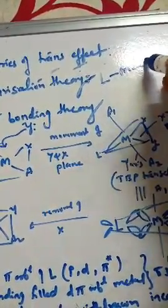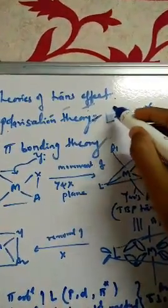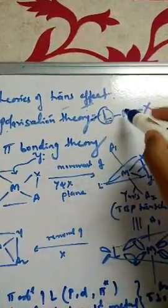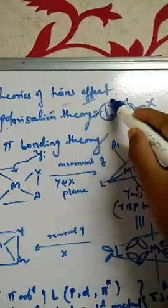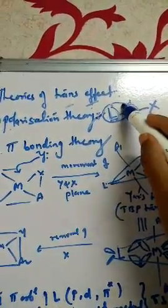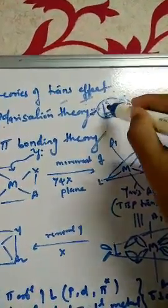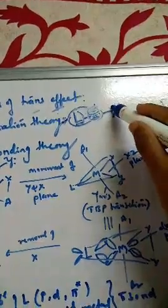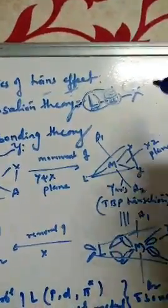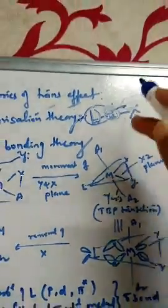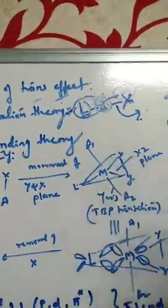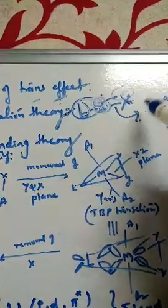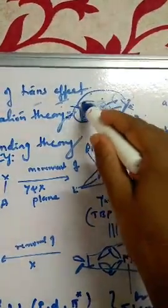In the polarization theory: a ligand is there, metal is there, and a trans ligand is there. The ligand gets polarized by the metal ion, creating a dipole moment. The metal develops electron clouds drawn from this ligand, and because of this, the electrons on the trans ligand X are repelled, weakening that bond so X can easily leave. This easy leaving of ligand X due to the nature of the polarized ligand is called the trans effect.